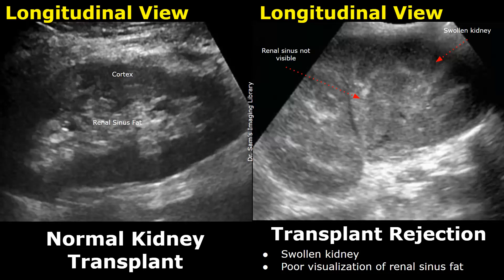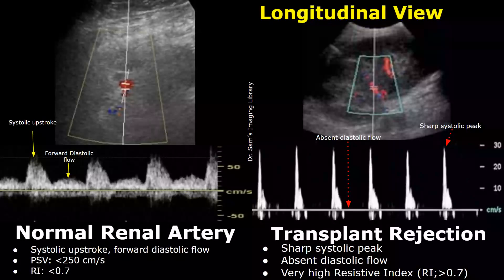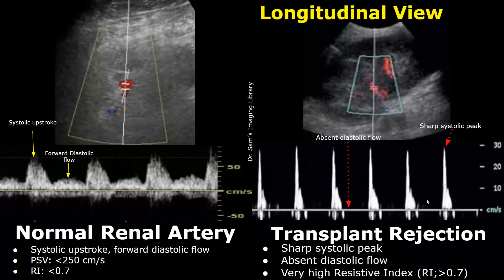On spectral Doppler analysis, transplant rejection may show a sharp systolic peak and absent diastolic flow in the renal arteries. Another distinctive feature will be a very high resistive index, much greater than 0.7. Thank you so much for watching — please subscribe and stay tuned for more imaging videos.